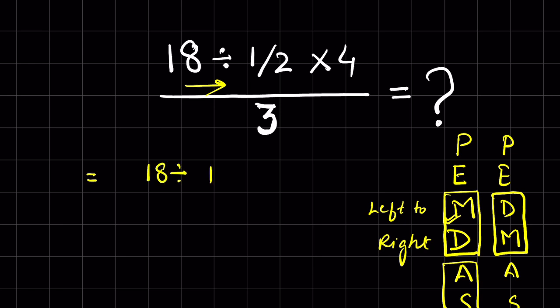18 divided by 1/2 - we convert division into multiplication, and when we convert division into multiplication, the fraction after that gets inverted. We have to write the reciprocal of 1/2, that will be 2. So 18 times 2 is 36. Now write 36 times 4/3.